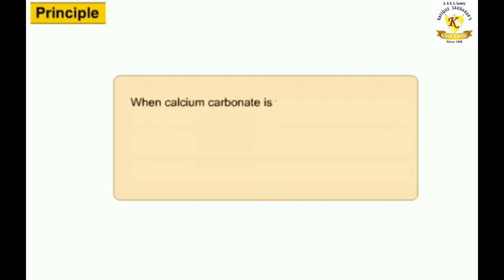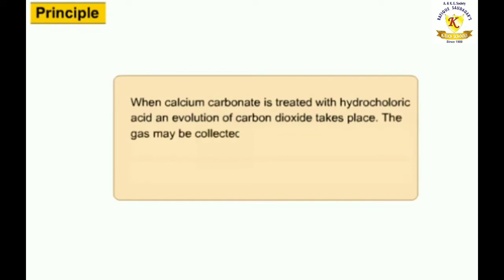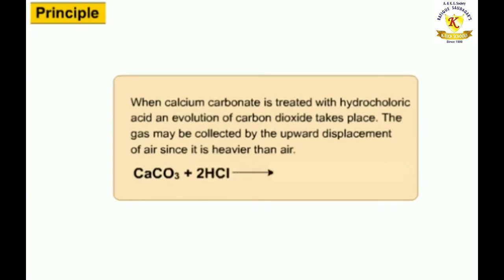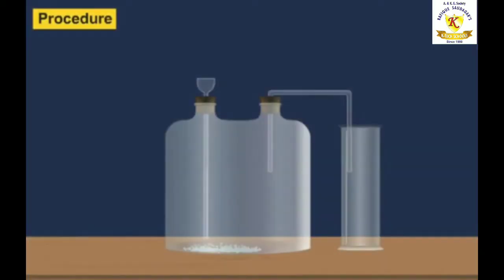Let us see the principle of this experiment. When calcium carbonate is treated with hydrochloric acid, evolution of carbon dioxide takes place. The gas may be collected by the upward displacement of air since it is heavier than air. So let us see the reaction: CaCO3 plus 2HCl will give us CaCl2 plus H2O plus CO2. Let us see the procedure now.